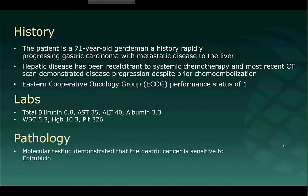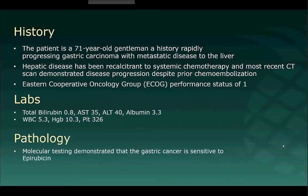The patient is a 71-year-old gentleman with a history of rapidly progressive gastric cancer with metastatic disease to the liver. The patient's hepatic disease has been recalcitrant to systemic chemotherapy, and the patient's most recent CT scan demonstrated disease progression despite prior hepatic chemoembolization with drug-eluting beads with irinotecan, as well as systemic chemotherapy. The patient's Eastern Cooperative Oncology Group, or ECOG, status was 1.